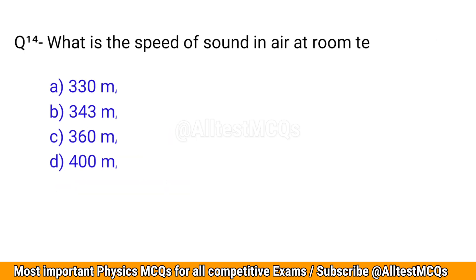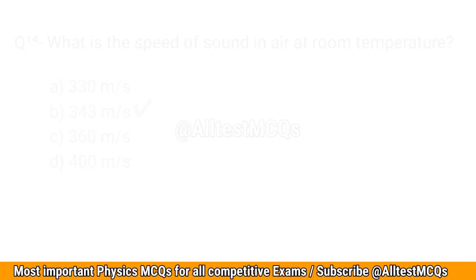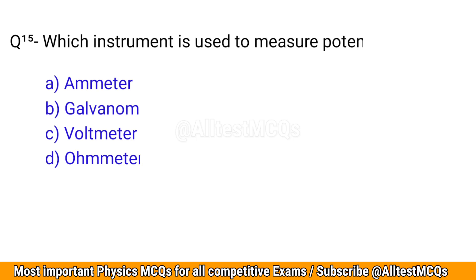Q14. What is the speed of sound in air at room temperature? The correct option is B: 343 meters per second.